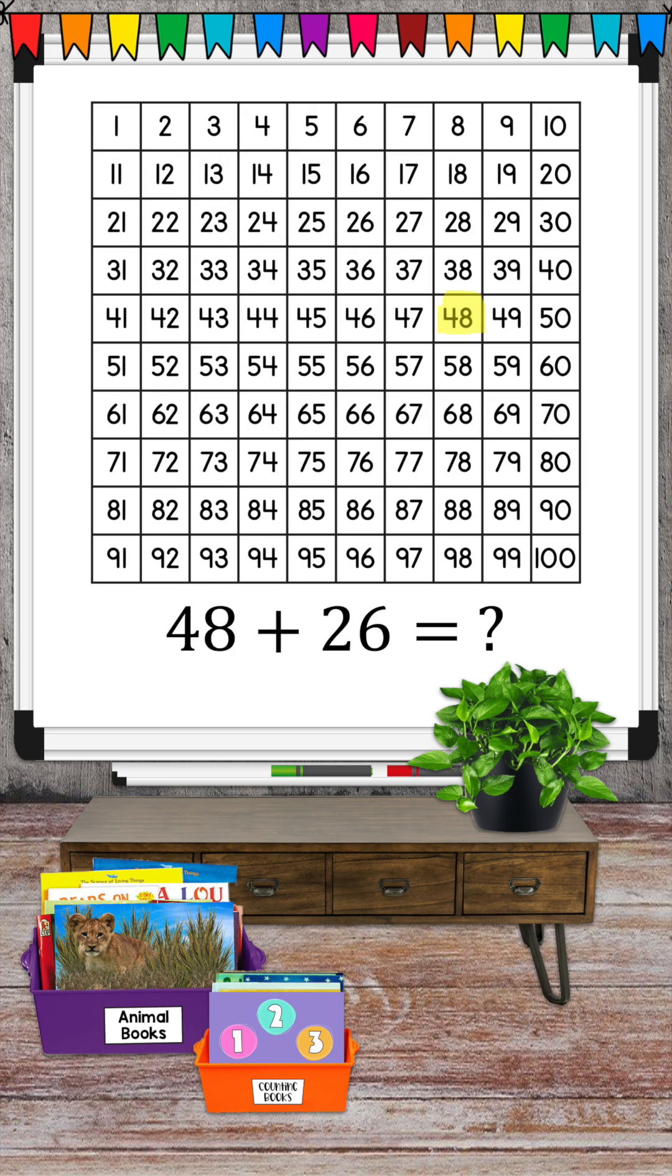Find 48, drop down two blocks. One, two. We're now at 68.